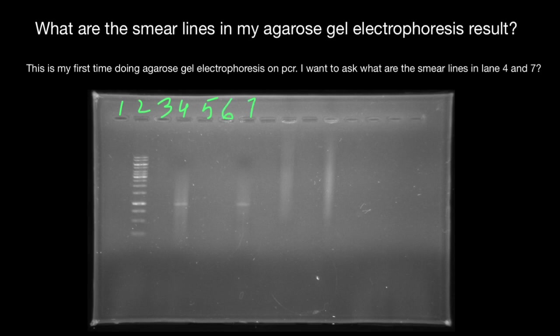It looks like nothing in lane one. I'm just wondering if there is a negative control here — if not, you probably should run one. The question is about lanes four and seven. In lane two, we see a ladder and it looks fine.